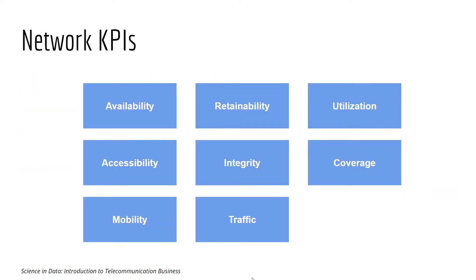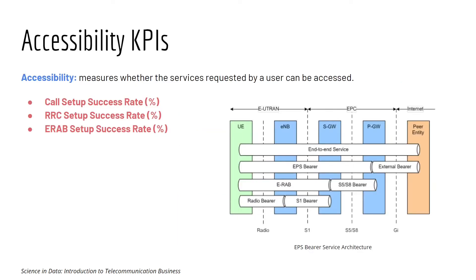Next we have Network KPI. The first category is Accessibility KPI, which measures whether the service requested by a user can be accessed. Key metrics include: Call Setup Success Rate, which measures the success rate of call attempts; RRC, or Radio Resource Control Setup Success Rate, which measures the success rate of UE attempts to connect to an eNodeB; and ERAB Setup Success Rate, which measures the success rate of UE attempts to connect to the MME, or Mobility Management Entity.